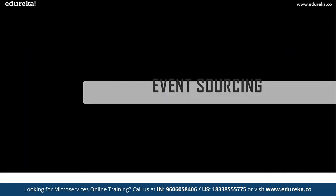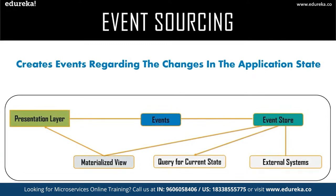Let's move forward with the event sourcing design pattern. This pattern creates events regarding the changes in the application state. These events are stored as a sequence of events to help developers track which change was made, when, and by whom. With this, you can adjust the application state to cope with past changes and query these events for any data change, and simultaneously publish events from the event store. Once events are published, you can see the changes of the application state on the presentation layer. Event sourcing is used when you've made a change and want to go back to a previous state.